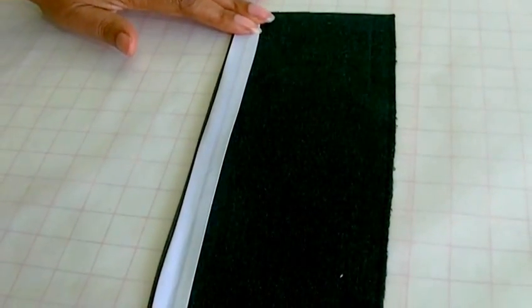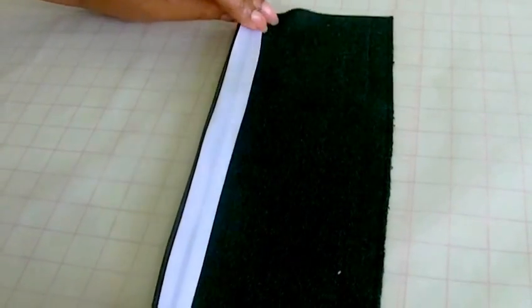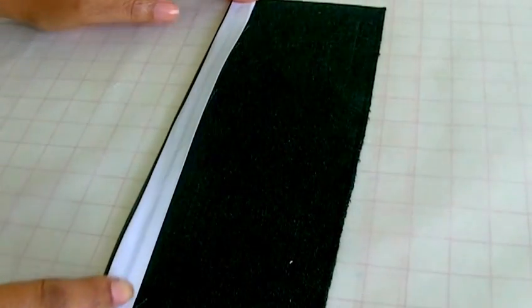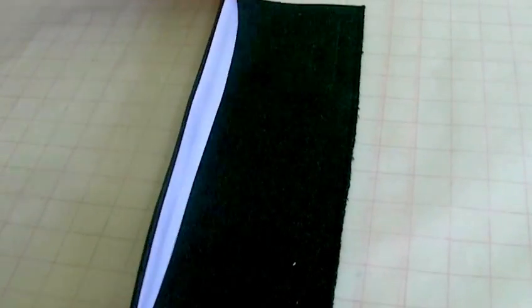And then that will conceal the raw edge. And then what we're going to do is stitch along this fold here, and then you'll have a concealed straight raw edge.